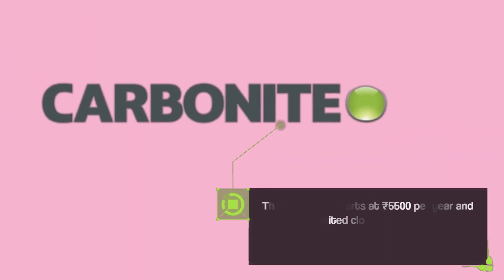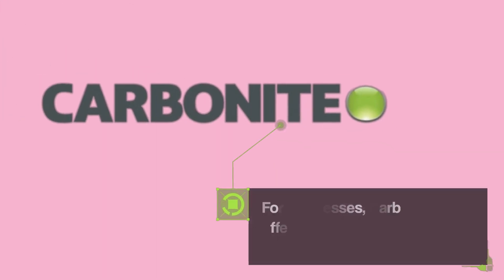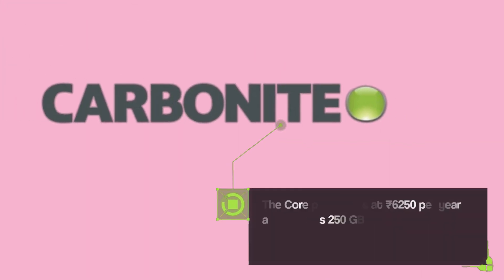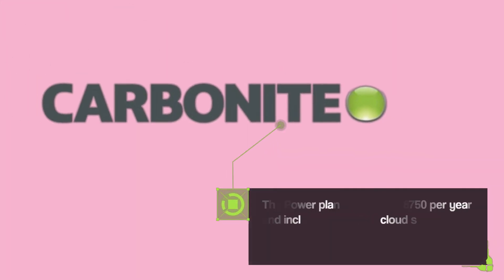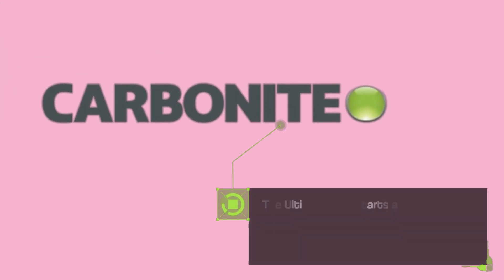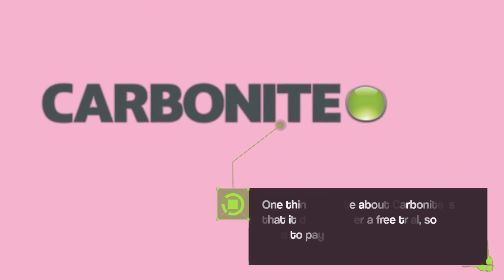The Prime plan starts at 5,500 rupees per year and includes unlimited cloud storage for an unlimited number of computers, external hard drives, and automatic video backup. For businesses, Carbonite offers three plans: Core, Power, and Ultimate. The Core plan starts at 6,250 rupees per year and includes 250 gigabytes of cloud storage and backup for an unlimited number of computers. The Power plan starts at 18,750 rupees per year and includes 500 gigabytes of cloud storage and advanced features like server backup and remote deployment. The Ultimate plan starts at 37,500 rupees per year and includes 500 gigabytes of cloud storage, advanced features, and priority support.